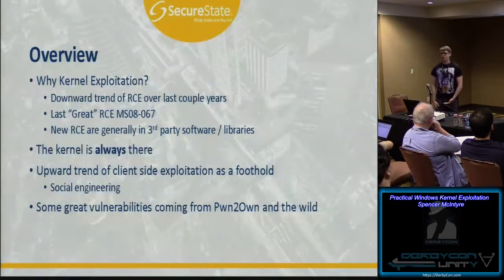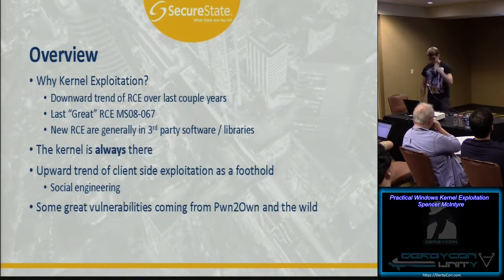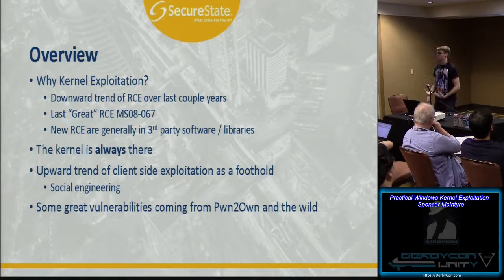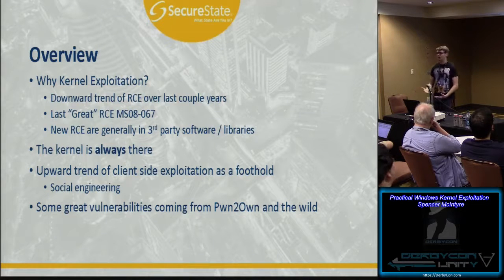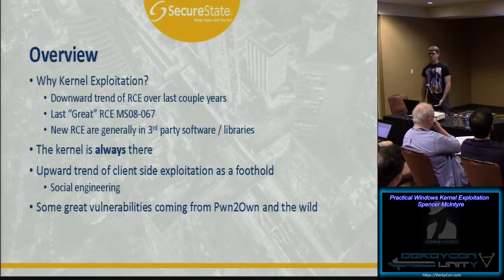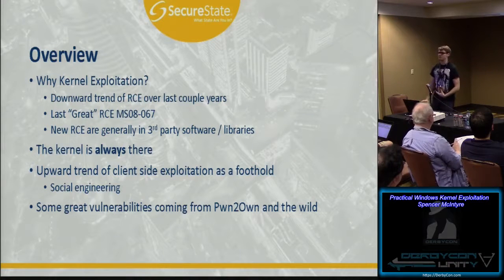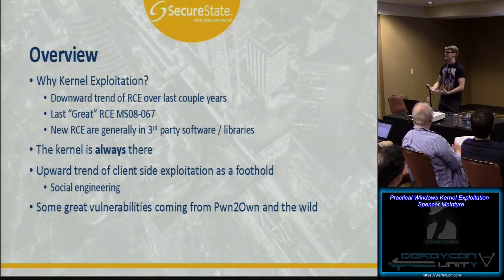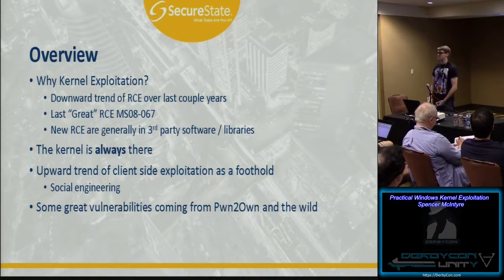Some of the basics: why kernel exploitation? Why do we care? There's been a downward trend of remote code execution vulnerabilities. Arguably one of the last great ones was MS08-067, all the pen testers' favorite — that reliable code execution you can still find. I found it on a domain controller. It's starting to become less apparent because people are actually patching. RCE is now generally being found in third-party libraries, so we're still seeing RCE but it's not quite as prevalent in the Windows source.